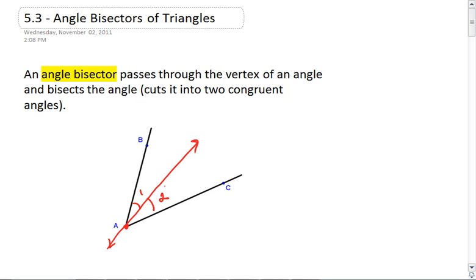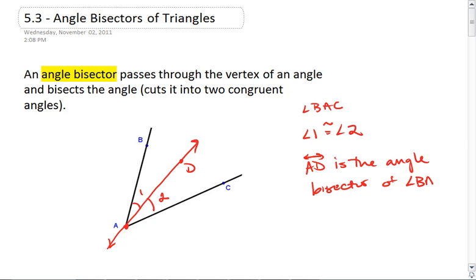So here, with angle BAC, if angle 1 is congruent to angle 2, that means that line AD is the angle bisector of angle BAC.